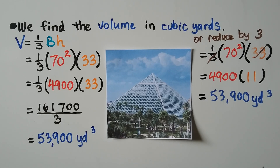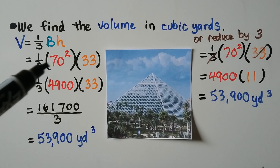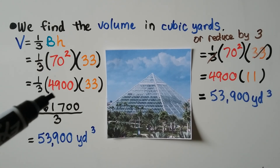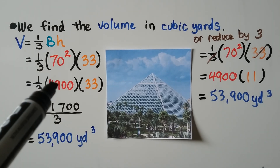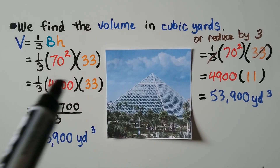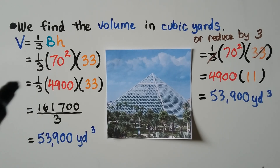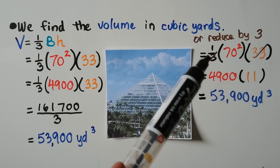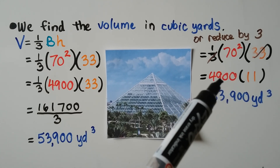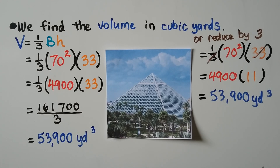Now we find the volume in cubic yards. Using V equals one-third BH, the base side is 70 yards, so the base area is 70 times 70 equals 4,900. The height is about 33 yards. So we do one-third times 4,900 times 33. The product 4,900 times 33 is 161,700, divided by three gives 53,900 cubic yards. Alternatively, we could cancel the 3 and the 33, leaving 4,900 times 11, which also gives 53,900 cubic yards.